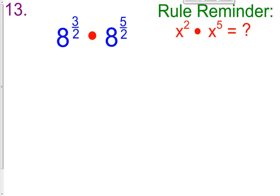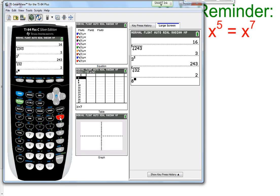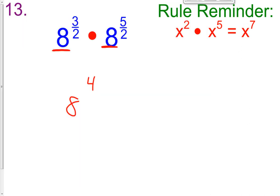We're going to do a few more problems in this video lesson. Problem number 13 is a rule reminder: when we have common bases and multiply, we add their exponents. We have 8 and 8 as the base, so we just add their exponents. 3 halves plus 5 halves is 8 halves, so we have 8 raised to the 8 halves. We know 8 halves equals 4, so our answer is 8 raised to the 4th. Let's put that in the calculator — 8 raised to the 4th is 4,096. That's our answer for problem 13.